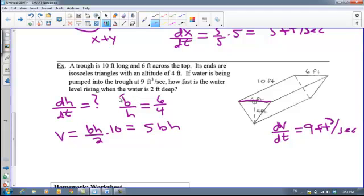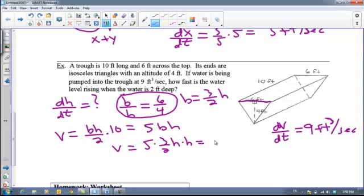But what I can do now is I can use this right here to solve for one of these. And I'd like to solve this for B equals, so I'm going to get that B equals, of course, 6 forces, 3 halves. B equals 3 halves H. So I'm going to have that my V is 5 times 3 halves H, times H, which is 15 halves H squared. That's my volume equation in terms of the height.